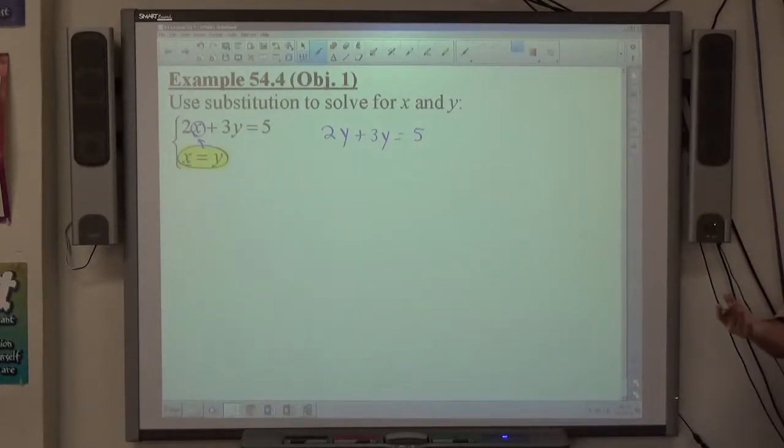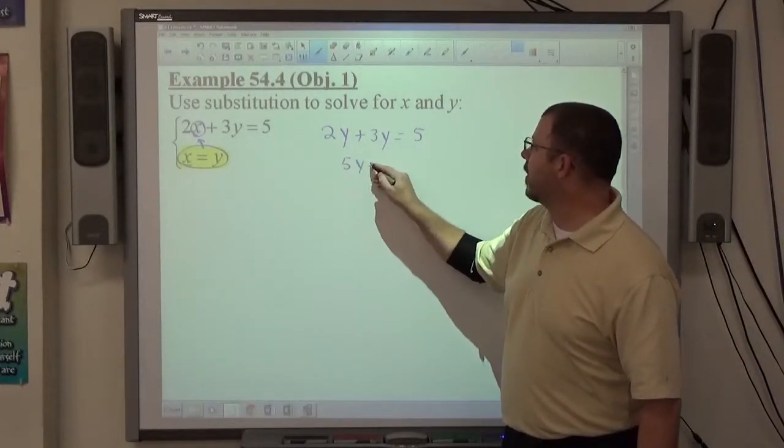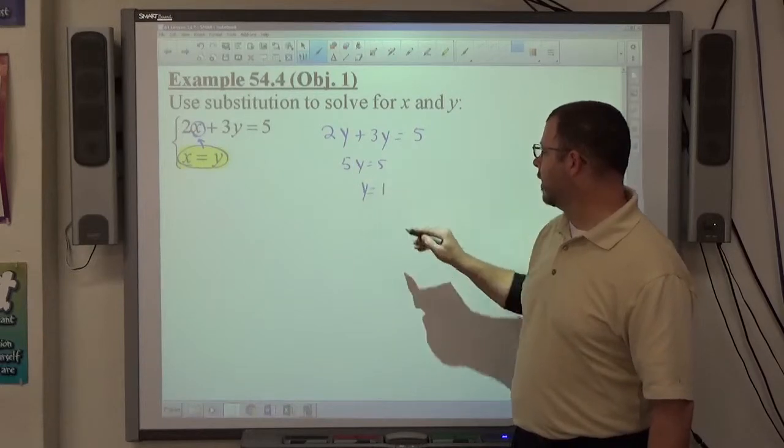All right, so 2y plus 3y equals 5 because, again, x and y are interchangeable according to this statement. X and y are equal to each other. So, this gets me 5y equals 5, therefore, y must equal 1.